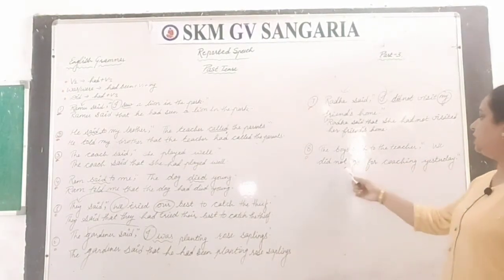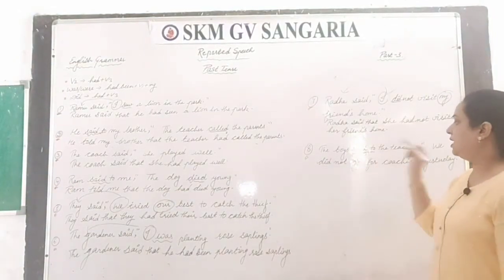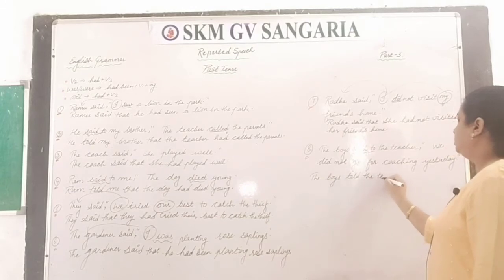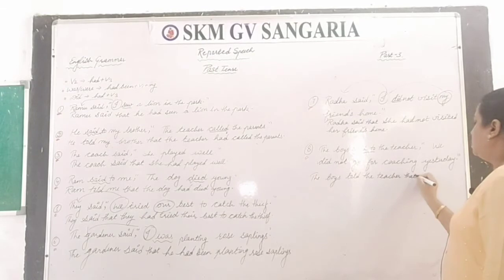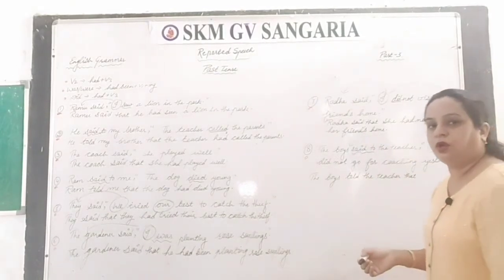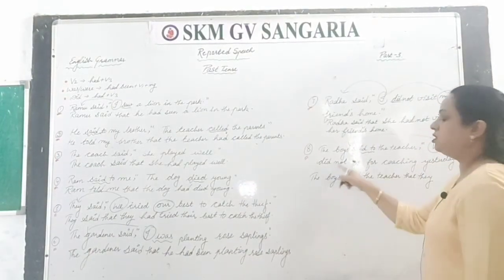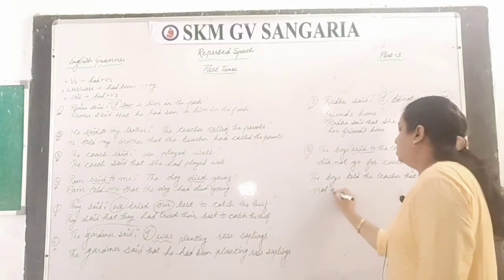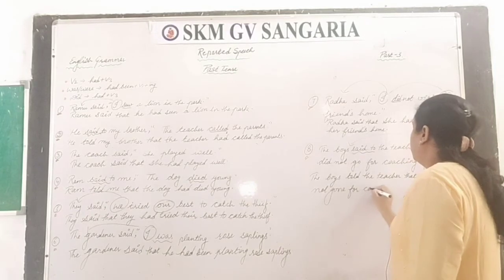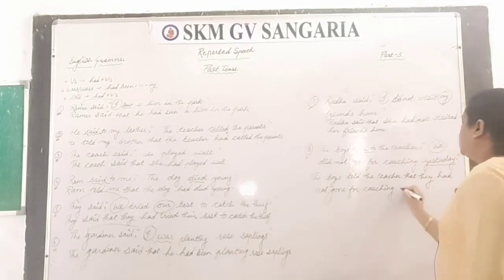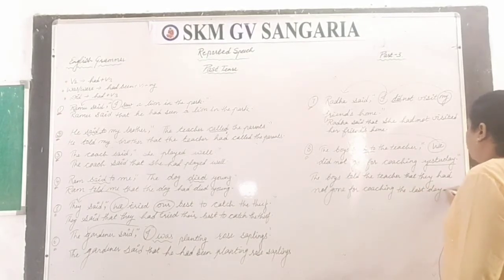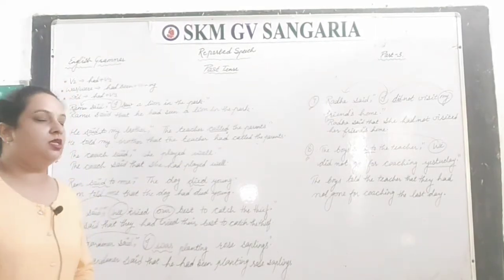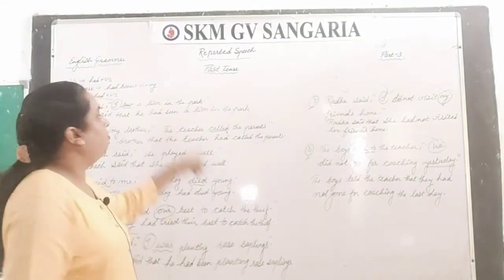The boys said to the teacher, 'We did not go for coaching yesterday.' 'Said to' changes to 'told'. 'We' changes to 'they' — the plural pronoun for boys. 'Did not' changes to 'had not'. 'Yesterday' changes to 'the previous day'. Answer: the boys told the teacher that they had not gone for coaching the previous day.